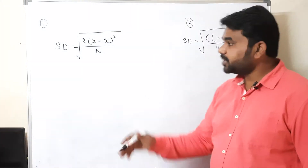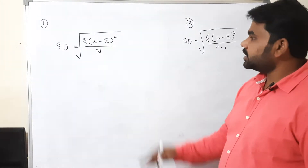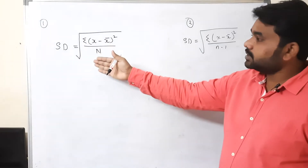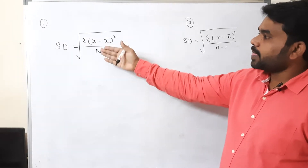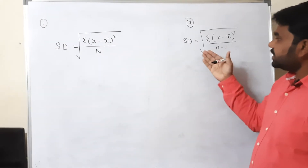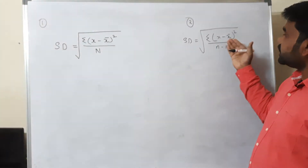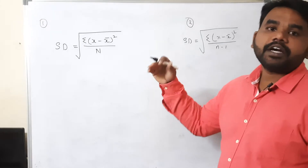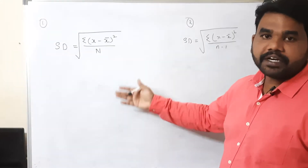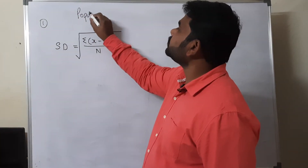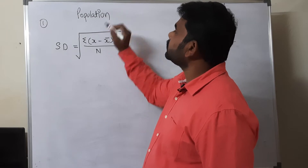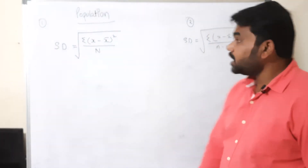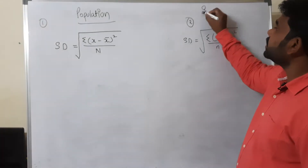These are the two types of formulas where you might get confused about which is correct. Both formulas are correct. The first formula — SD equals the square root of the sum of (x minus x-bar) squared divided by capital N — is used when you are collecting data from a population. The second formula — divided by (n minus 1) — is used when you are collecting data from a sample.